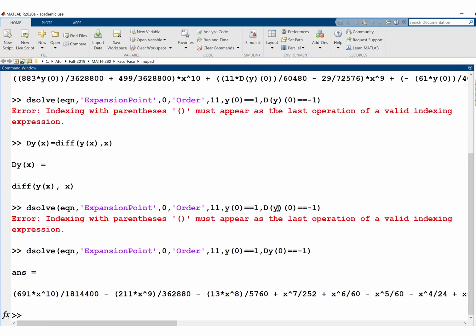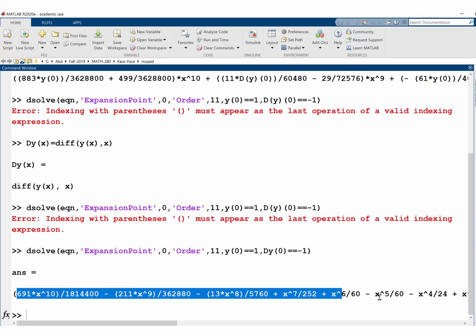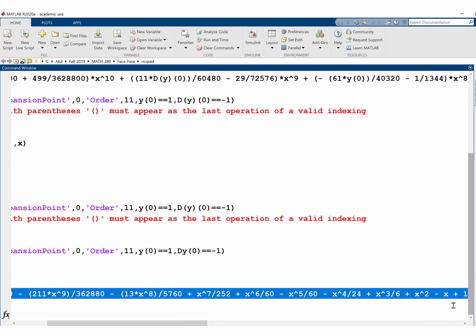So yeah, I defined dy at x, and here I put extra parenthesis, so that's what the mistake was, so here you have the, you know, the first 11 terms of infinite series expansion in the powers of x, all right.